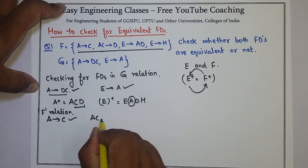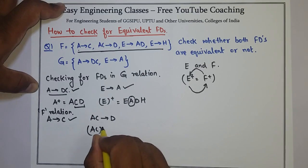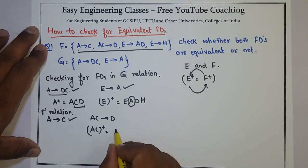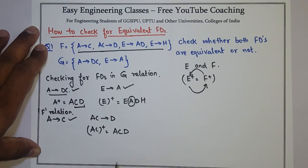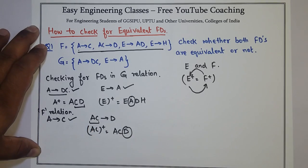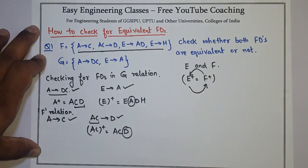Second is AC determines D. So find the closure of AC with respect to this. AC closure is AC. From A I can determine DC, so ACD. So I can see that from AC I am getting the value of D. So this is also correct.